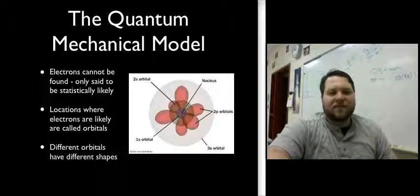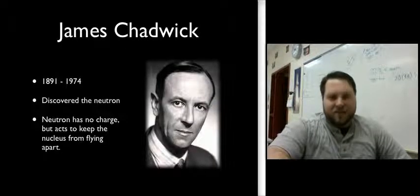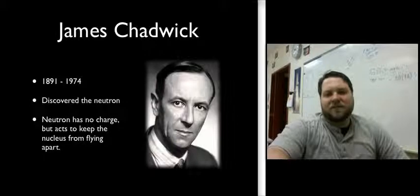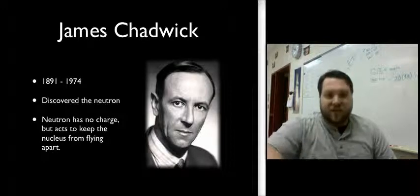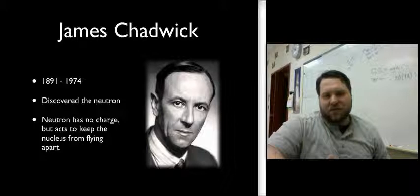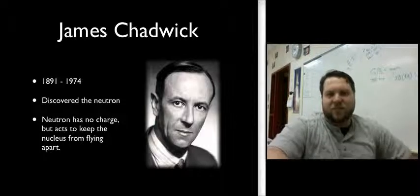All right, the last big discovery was by a man named James Chadwick, and this was in 1932. He discovered the neutron. So previous to this, we had no idea that the neutron even existed. We knew that there was a certain amount of mass, and we just figured that that was from protons and electrons, and that the charge canceled each other out. But it turns out that a lot of the mass was coming from these neutrons.